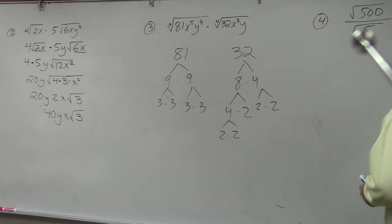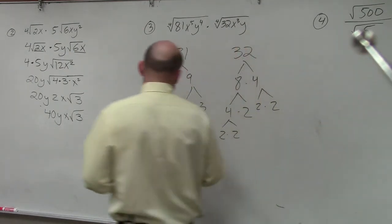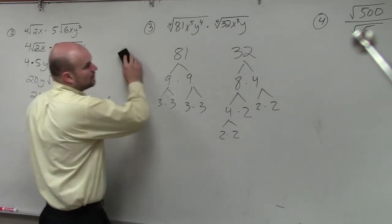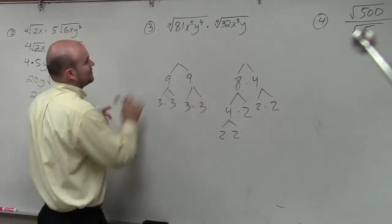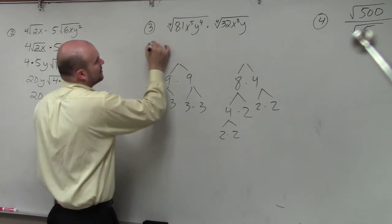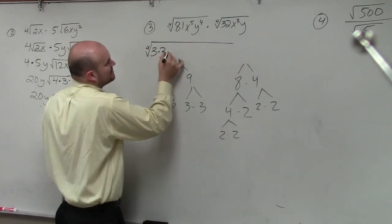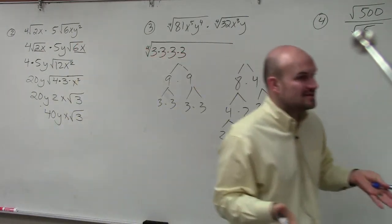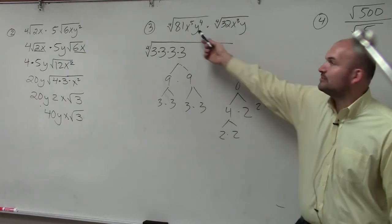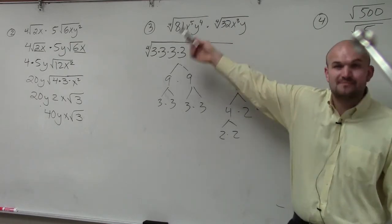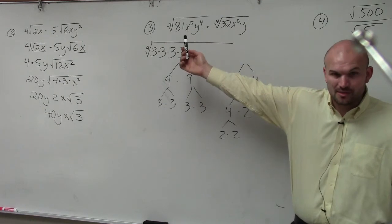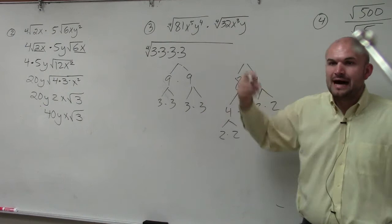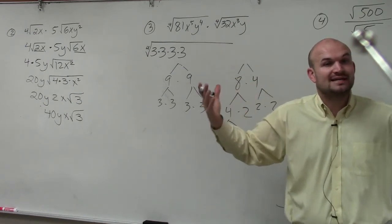So I can rewrite and simplify each one of those. I'm going to rewrite the factorization here. The fourth root of 81 is 3 times 3 times 3 times 3. I'm going to write out the factorization, but do you guys see how long this can be if I'm going to be writing x multiplied by itself 5 times, y multiplied by itself 4 times? That can be pretty cumbersome. So rather than doing the prime factorization for the x's and the y's, I'm just going to rewrite them to the power that I can take the root of.